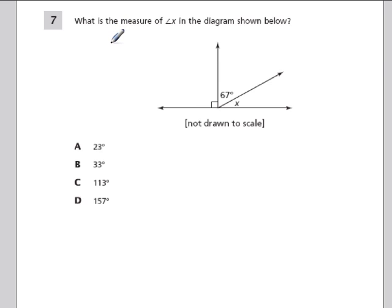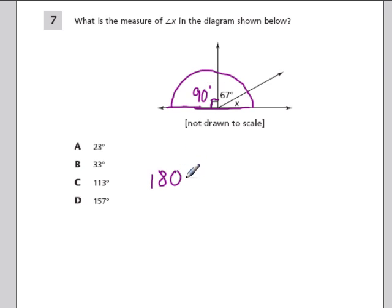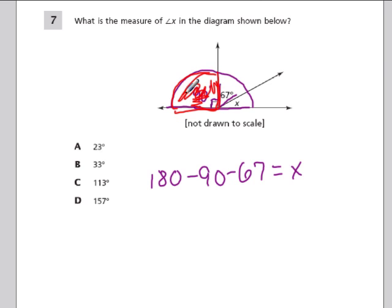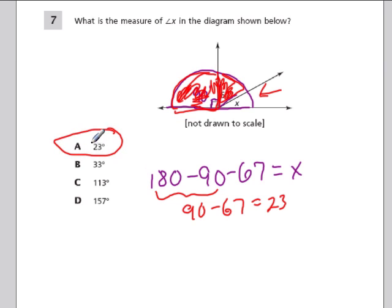Here, what is the measure of angle x in the diagram? We have a straight line, and that square symbol indicates a 90-degree angle. The straight line is 180 degrees total. We already know 90 degrees is taken, and this angle here is 67 degrees. So x equals 180 minus 90 minus 67: 180 minus 90 is 90, minus 67 is 23. The answer is A, 23 degrees.